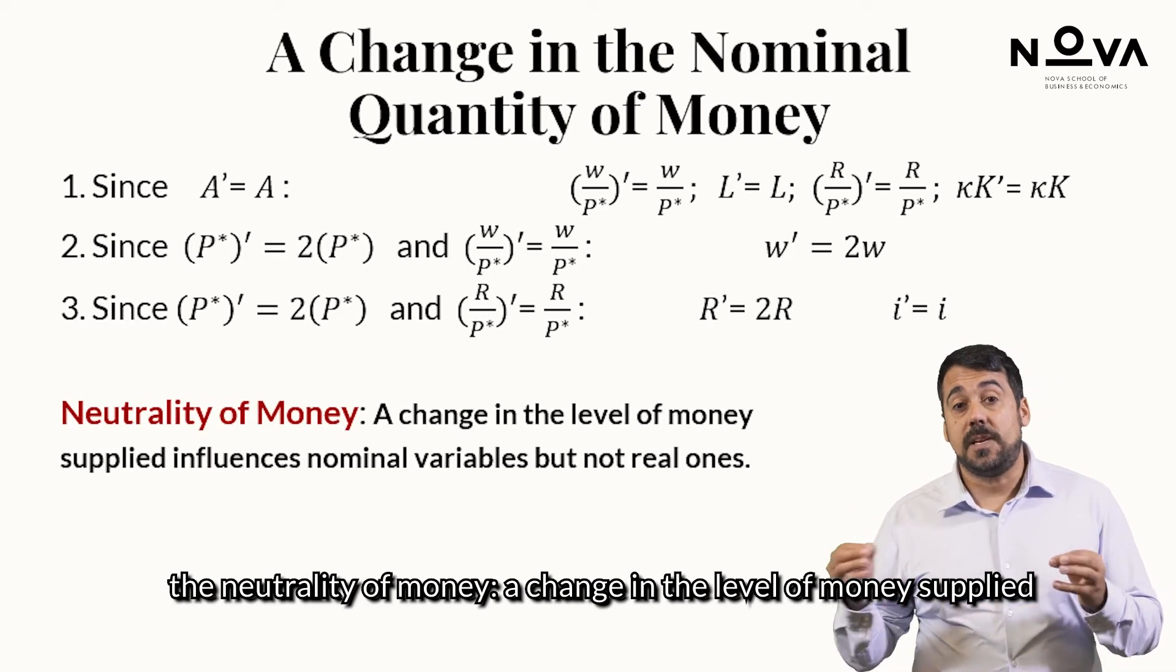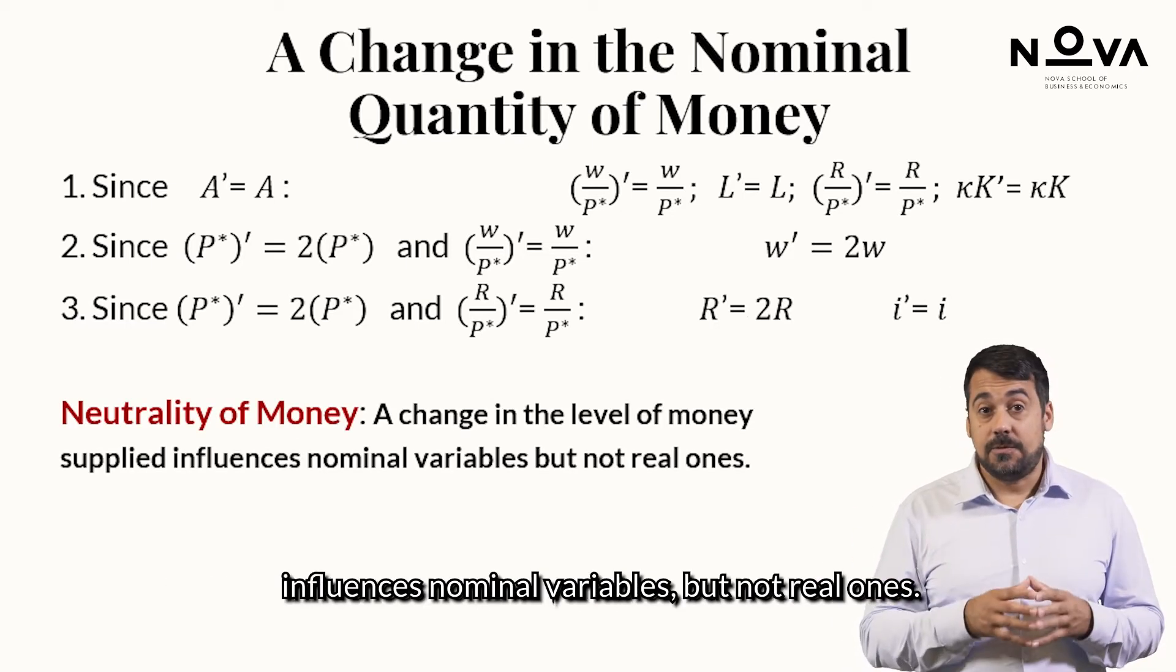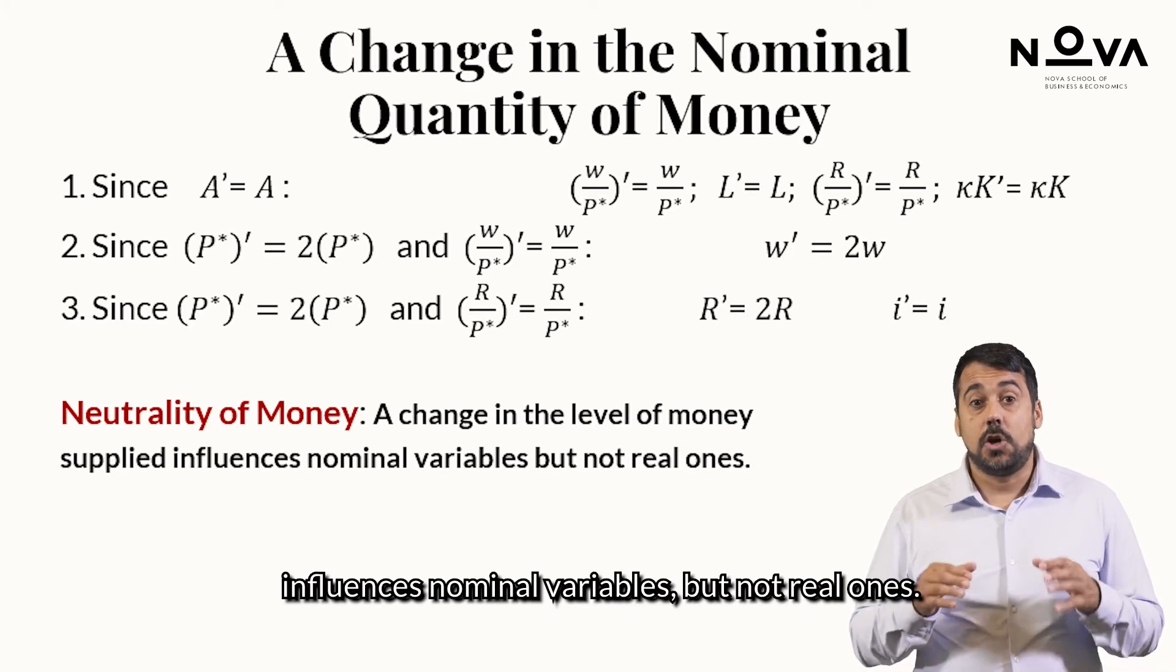This leads to a key result of this setup, the neutrality of money. A change in the level of money supplied influences nominal variables, but not real ones.